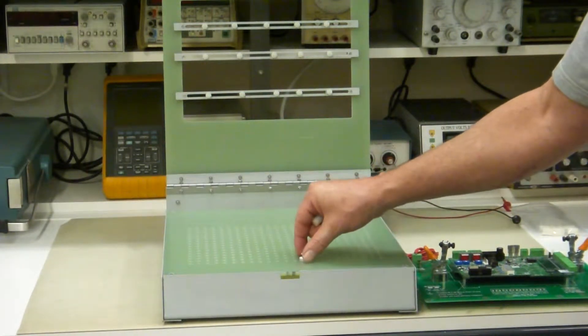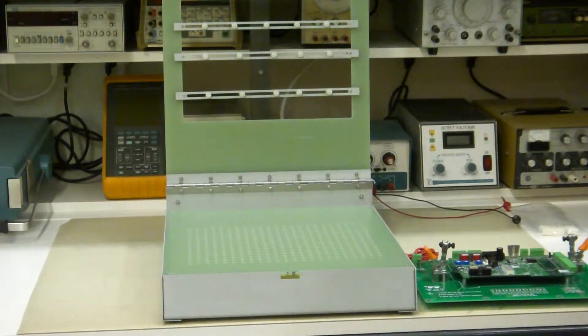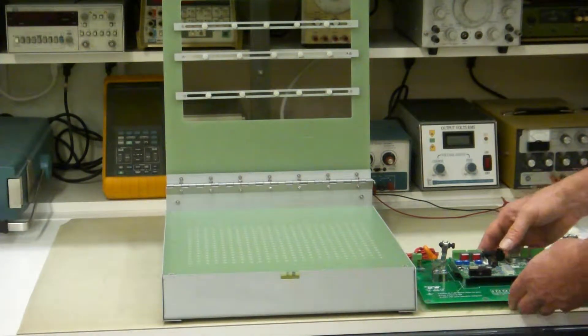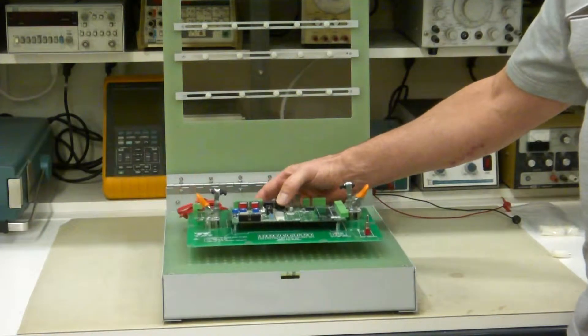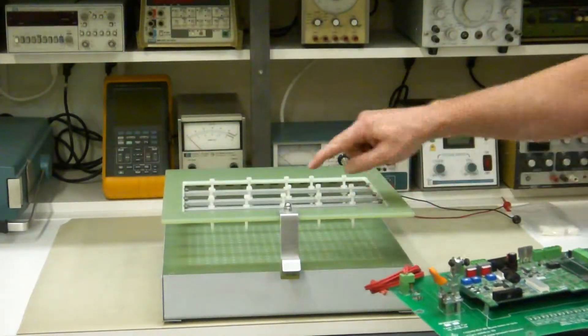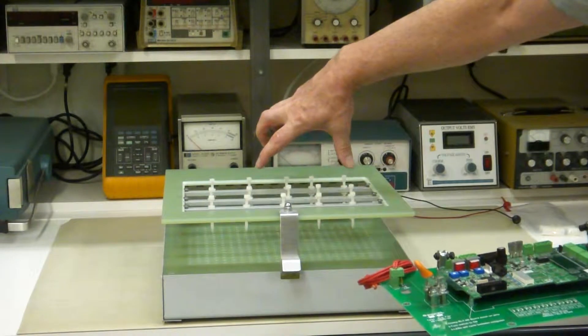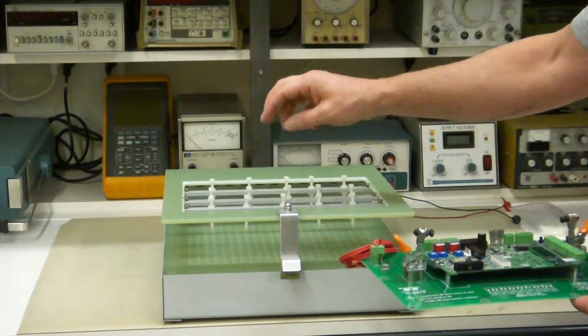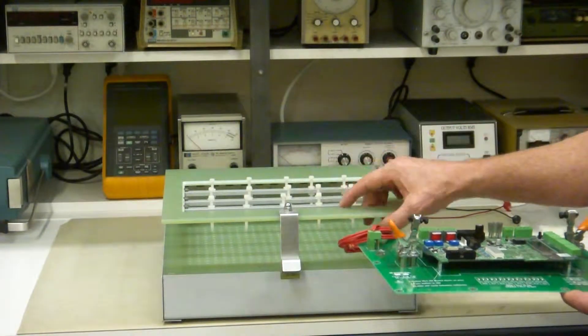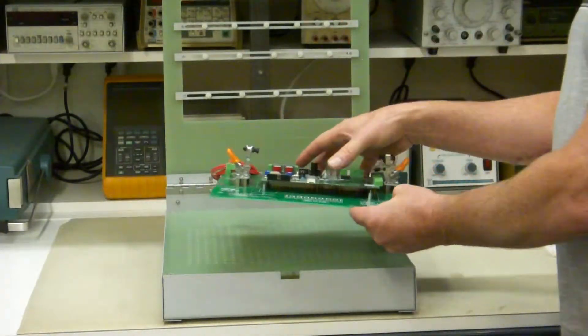And the reason for that is because we expect you to use this test fixture to test more than one of these. And the idea is to get these all at the same level so that you're not constantly adjusting these up and down. These are real easy to move back and forth and side to side but up and down takes a lot of turning and you've got to get each one exactly the same. It just takes a little time to do that.